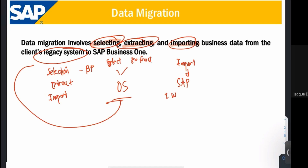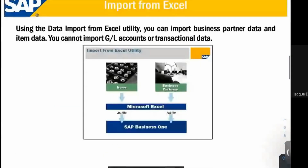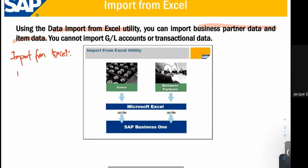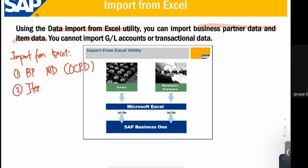How do we import from Excel? As a general rule, using import from Excel, what you can import is the business partner master data (OCRD) and your item master data (OITM) — only these two main master data types. You cannot import general ledger accounts because under SAP there are already built-in general ledger accounts. You also cannot import transactional data, meaning results of previous transactions cannot be imported from your legacy system to SAP.